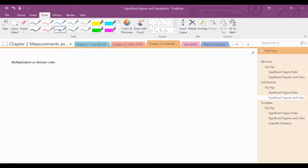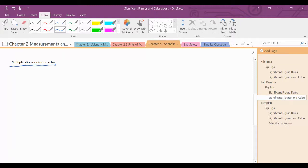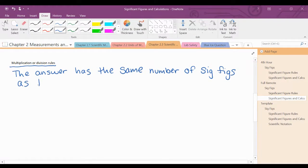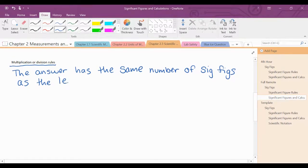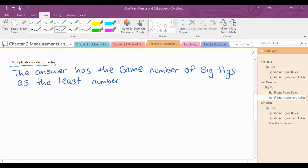Okay, our next lesson in terms of sig figs will be the rule for multiplication and division. So when you are multiplying and dividing, the answer has the same number of sig figs as the least number from the problem.